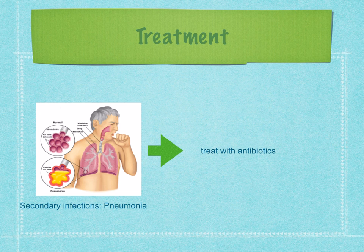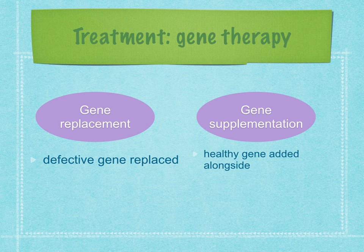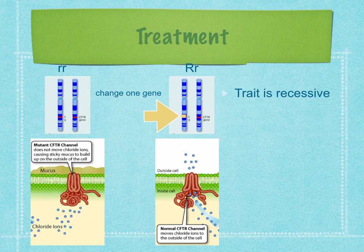Until recently, treatments were symptomatic — meaning the symptoms were treated, for example with antibiotics for pneumonia. Gene therapy is now a possibility. Gene replacement is where the defective gene is replaced with a healthy one. Gene supplementation is where one or more copies of the healthy gene are added alongside the existing ones. As the added genes have dominant alleles, the effects of the recessive alleles are overridden. Adding a functional gene does not remove the defective genes — cells produce both functional and non-functional proteins, but the presence of the correct gene will provide protein for normal chloride channels.